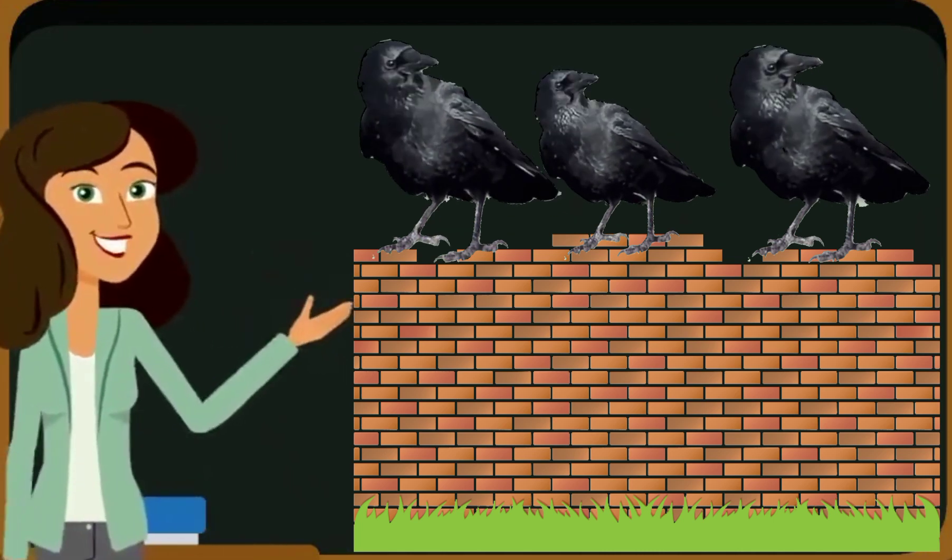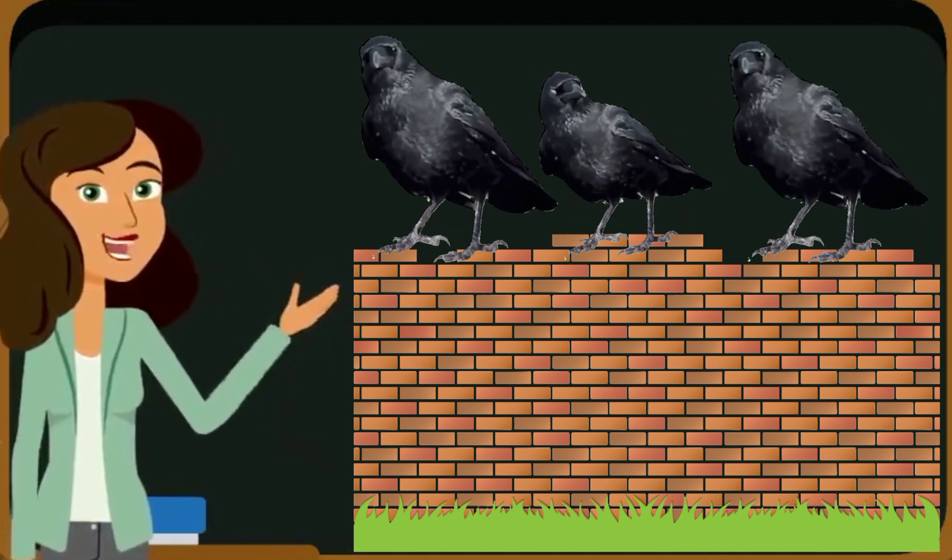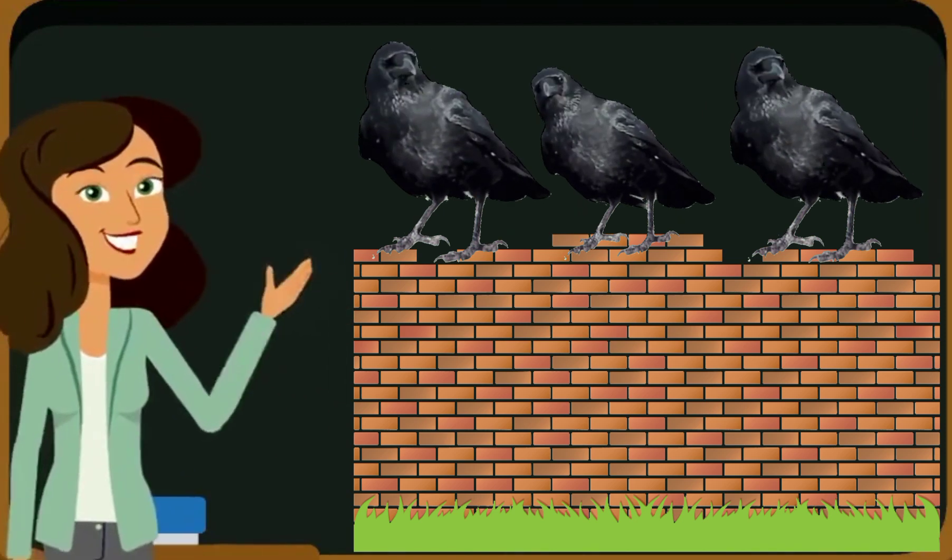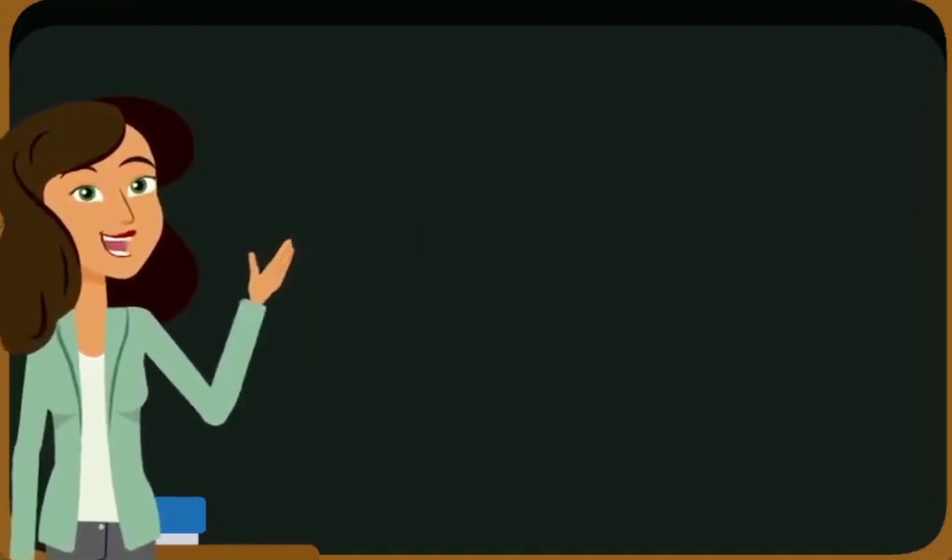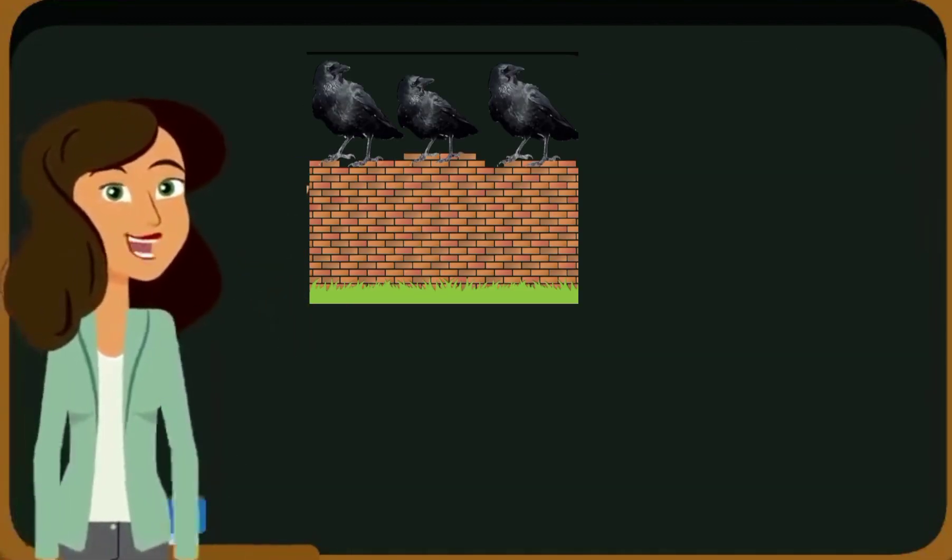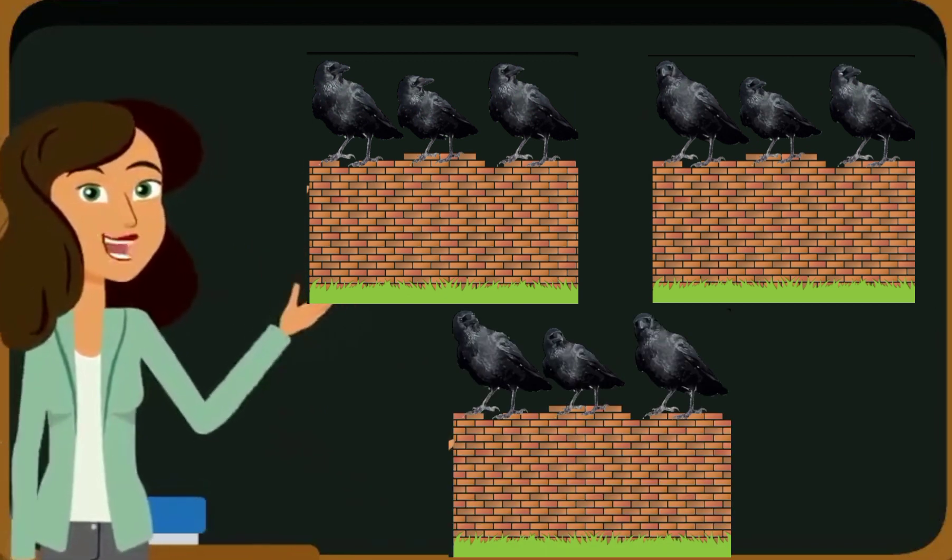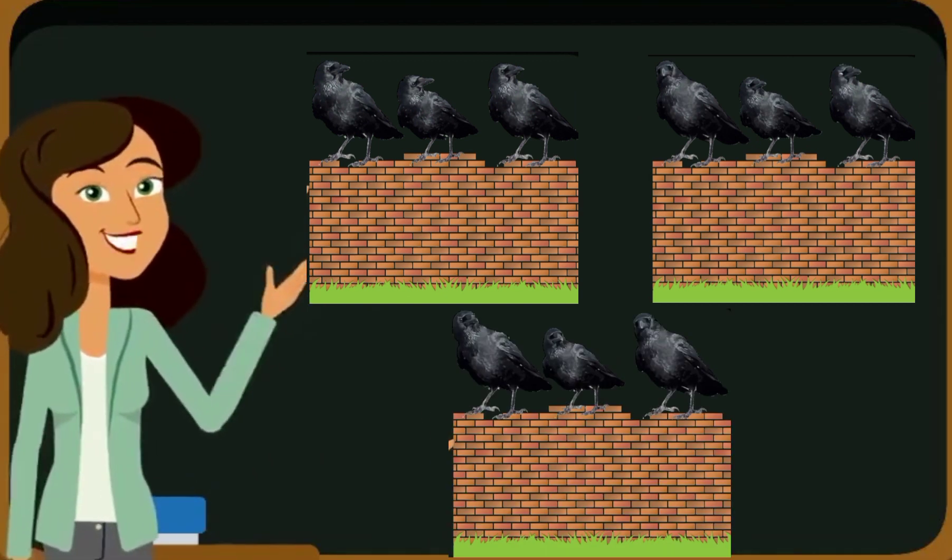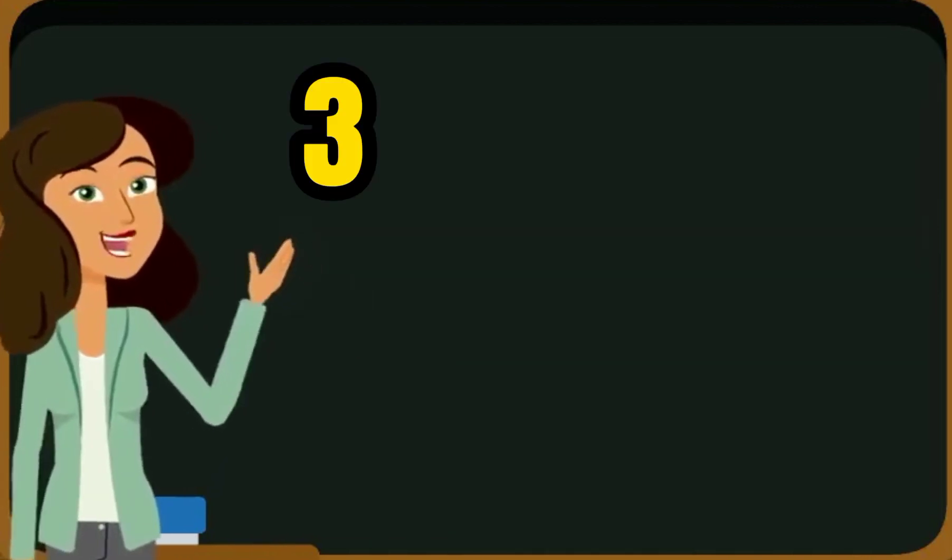So here we are taking three crows and they are sitting on a wall. We have to make them into three times. So here we have one group of crows, and then the second group are here, and then we have the third group. So let's count them like this.